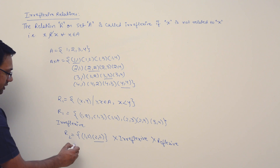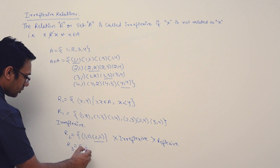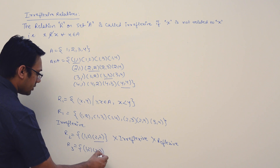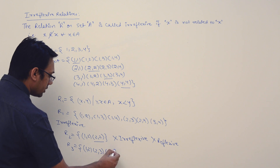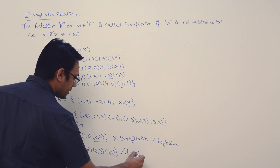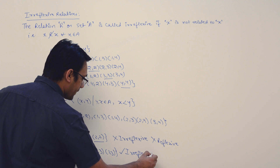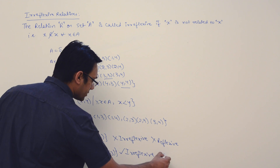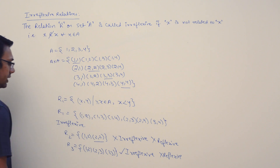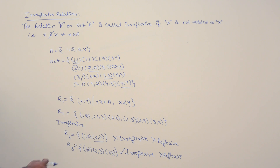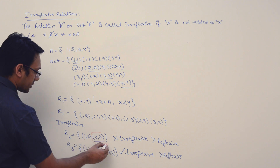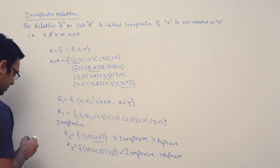If we have relation R3 = {(1,2), (2,3), (1,3)}, this relation is irreflexive and not reflexive. It is irreflexive because it does not contain any pair of the form (x, x).